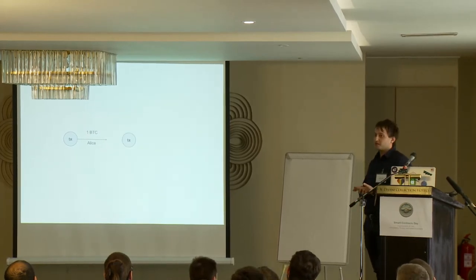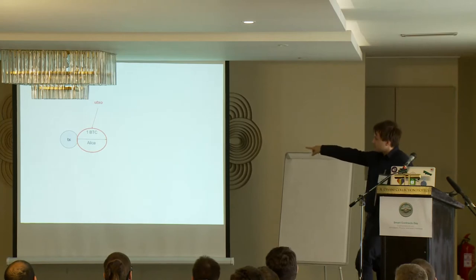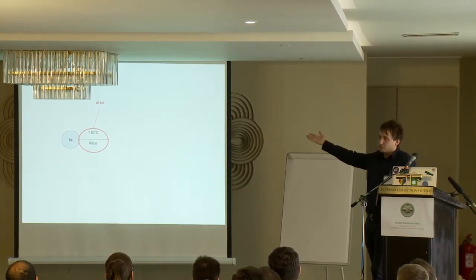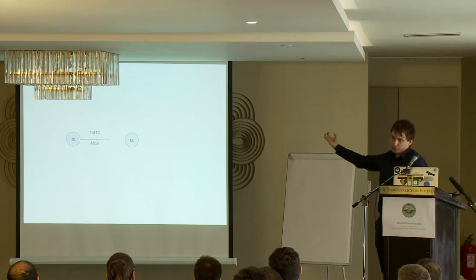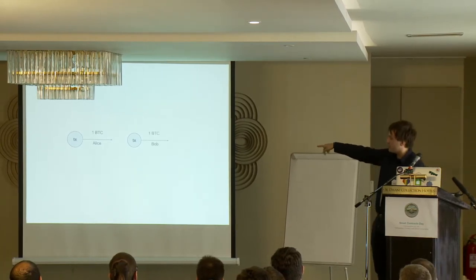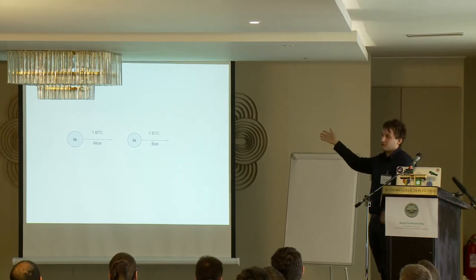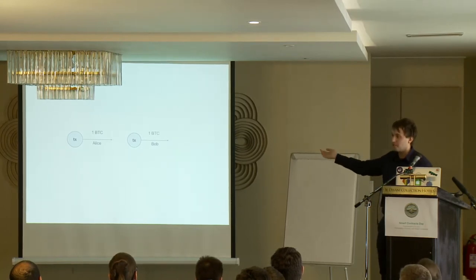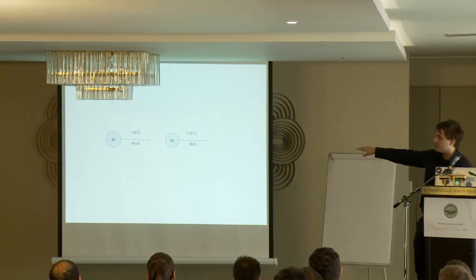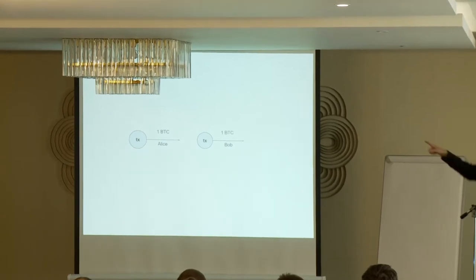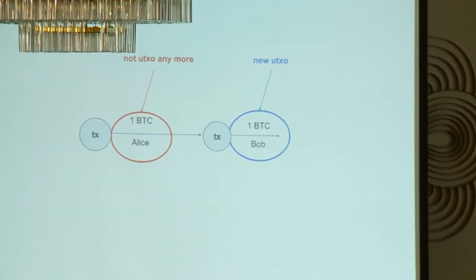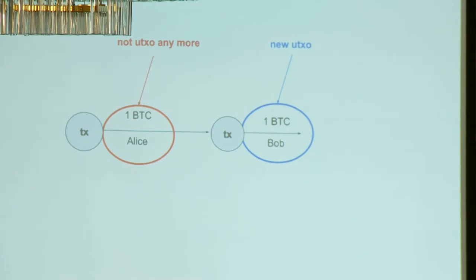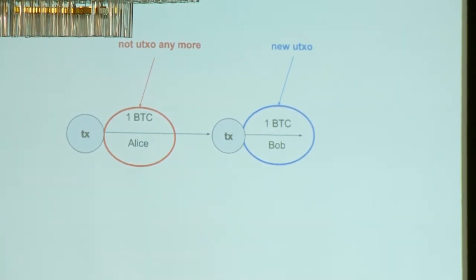If Alice wants to pay Bob, she finds this UTXO of one Bitcoin owned by her and creates a new transaction. She creates a new node with an output owned by Bob with the same monetary value. The old output edge that was the UTXO — owned by Alice — is connected to the new transaction, so it is no longer unspent. The new output for Bob now becomes the new UTXO. This is how we do spending in Bitcoin.